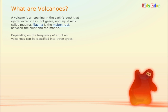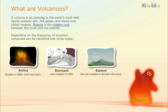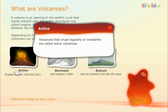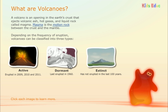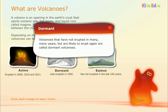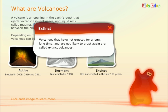Depending on the frequency of eruption, volcanoes can be classified into three types: active, dormant, and extinct. Active volcanoes are those that erupt regularly or constantly. Dormant volcanoes have not erupted in many years but are likely to erupt again. Extinct volcanoes have not erupted for a very long time and are not likely to erupt again.